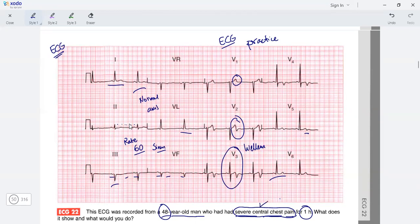The biphasic T wave in the anterior leads V2 to V3 indicates anterior ischemia. This is known as the Wellens pattern. Let's check out what Hampton says.